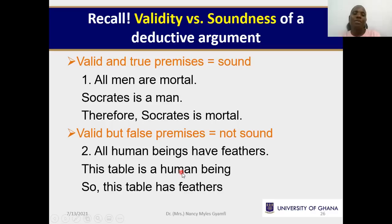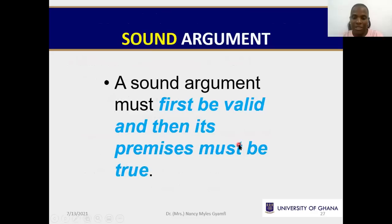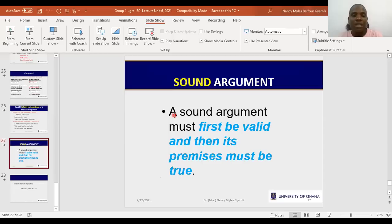A contrasting example: all human beings have feathers, this table is a human being, therefore this table has feathers. This is also valid — it follows the same pattern and affirms the antecedent. But it is not sound, because tables aren't human beings and human beings don't have feathers. So a sound argument must first be valid, and then its premises must also be true.